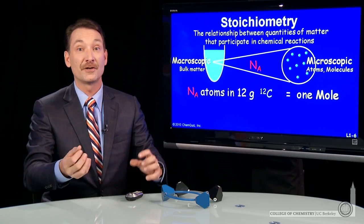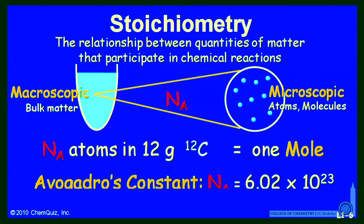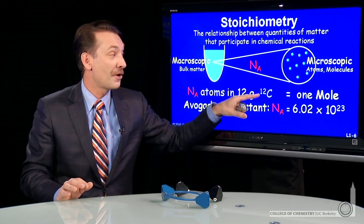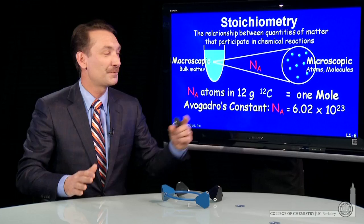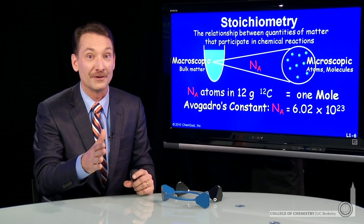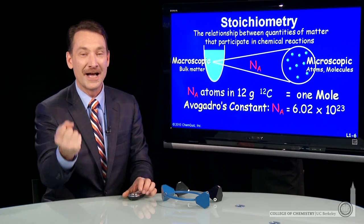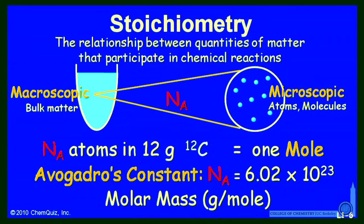How many particles are actually in that 12 grams of carbon-12? It turns out it's an astronomically large number — Avogadro's constant: 6.02 times 10 to the 23rd particles. That's 6 with 23 zeros after it, and that is the number of particles in 12 grams of carbon-12. Since hydrogen atoms are 1/12th the mass, 6.02 times 10 to the 23rd hydrogen particles will have a mass of 1 gram. I'll give this unit a special name: the mole.